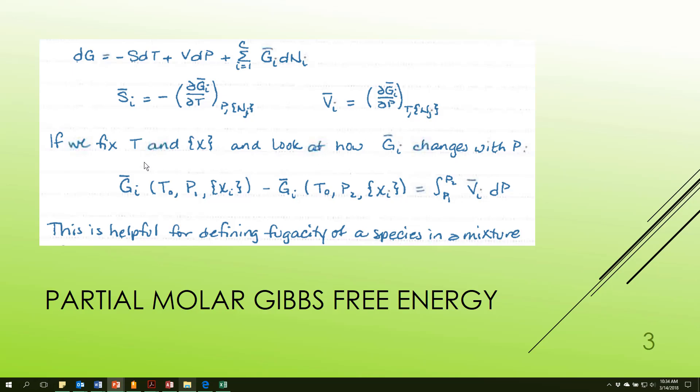Now, let's fix the temperature and the composition and look at how the partial molar Gibbs energy changes with pressure. If I do that, fixing the t's and the x's (or n's as it's written here, but in partial molar this becomes an x), then what I end up with is just the VdP piece.